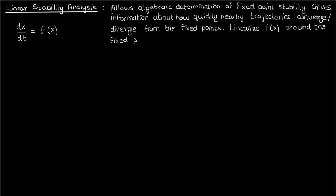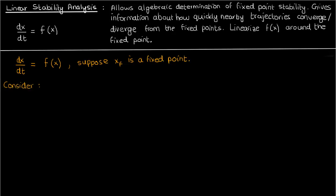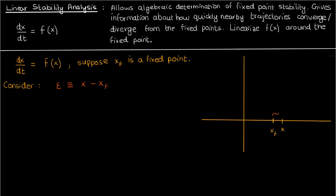Here's specifically how we do it. Say you have a one-dimensional dynamical system in which the position x of a particle is described by the differential equation dx/dt equals f(x). Now suppose x_f is the fixed point we're interested in. Let's consider a very small perturbation from the fixed point x_f given by epsilon. What we want to do is determine how very small perturbations from that fixed point — how very small epsilon — change in time.